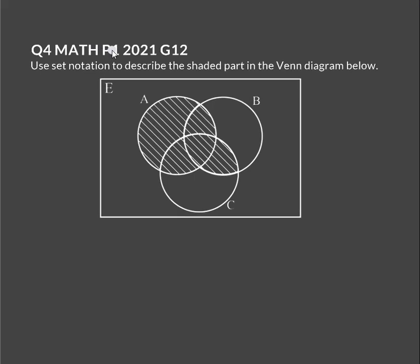Welcome to this video where we'll be answering various questions about sets. I'm going to start from the basics like shading, up until we are able to draw our own sets and fill them up and answer any questions that follow. The first question we are attempting here is from a past paper in 2021, asking us to describe the shaded part in the Venn diagram below.